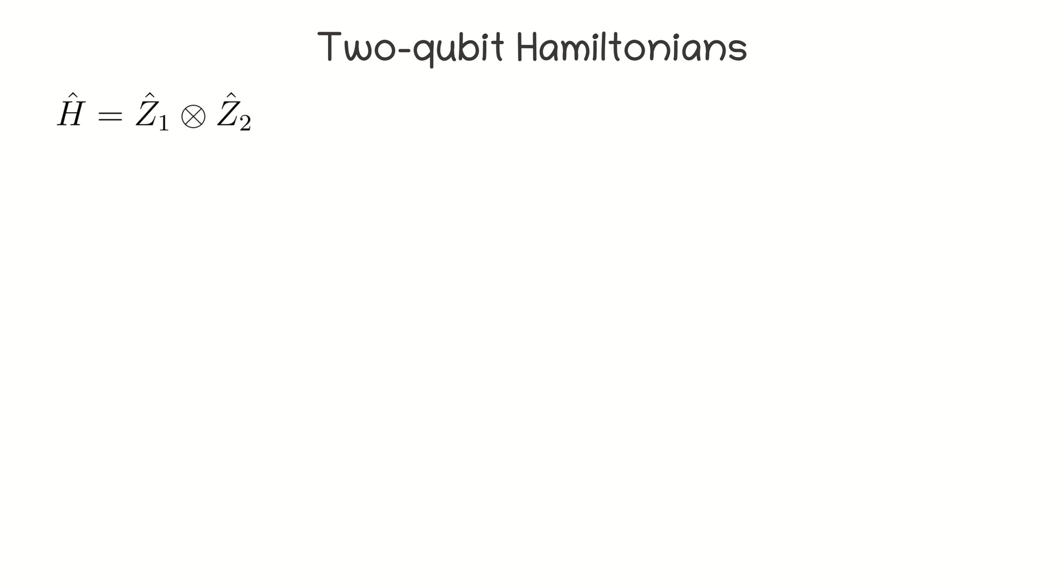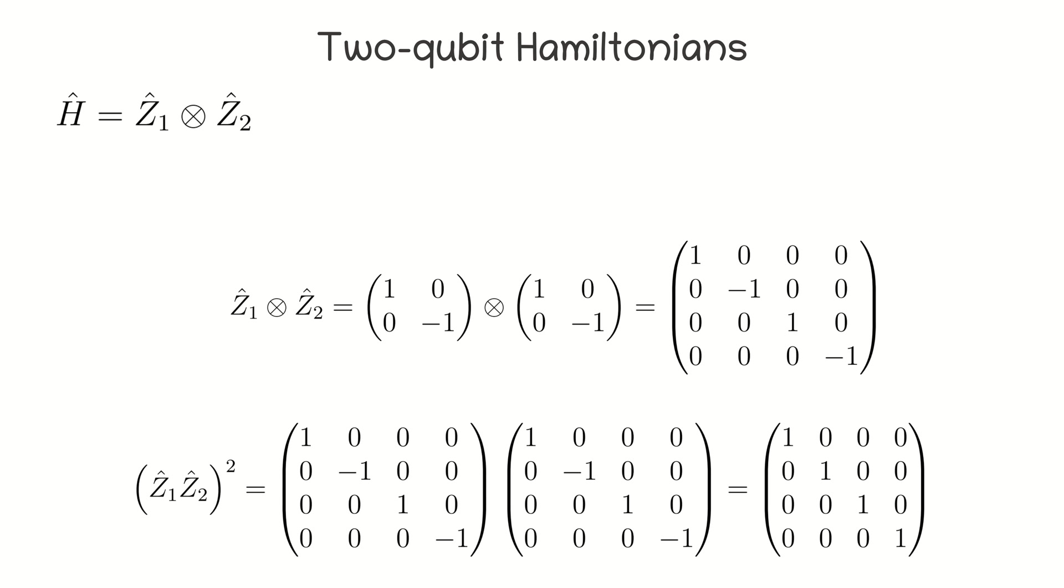Two-qubit Hamiltonians. Now, consider the situation when a Hamiltonian consists of some Pauli operators applied to two qubits. Let us start with the Hamiltonian formed by two Z operators. Here, and further in this video, the subscript denotes the sequential number of the qubit. This operator looks as follows, and the square of this operator is a unit matrix.